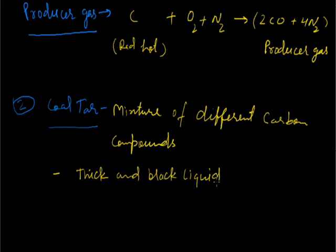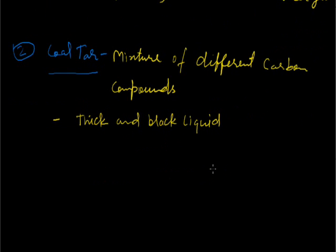It has an unpleasant smell. When coal tar undergoes fractional distillation, it gives many chemical substances which are used in preparation of different important substances like dyes, explosives, paints, synthetic fibers, drugs, pesticides, etc.